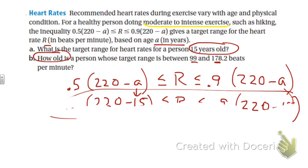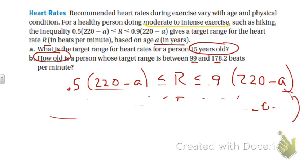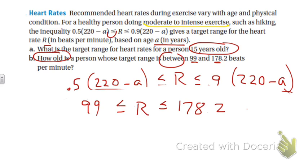Let me erase some stuff here. So they're trying to find the age now, and we know the range is between 99 and 178.2. That's what that looks like. And I don't like their use of the word between, doesn't really... because between is not necessarily consistent there, but that's okay. So they're trying to figure out what is the age that would make that range.